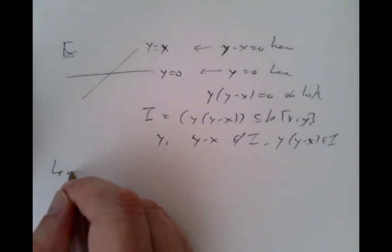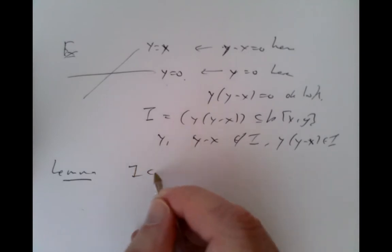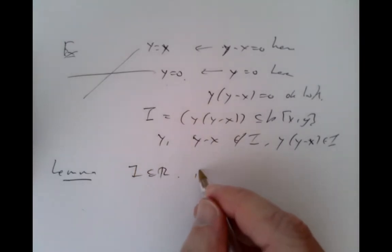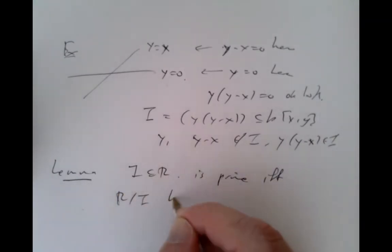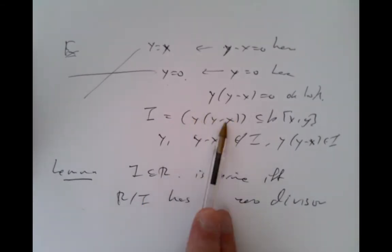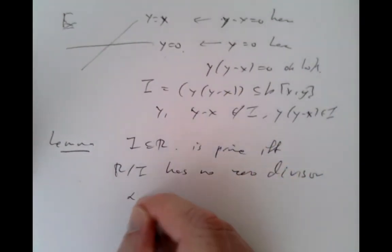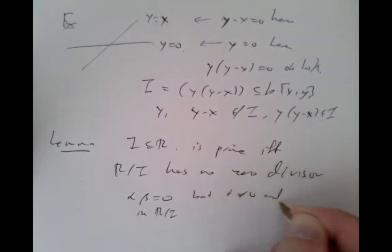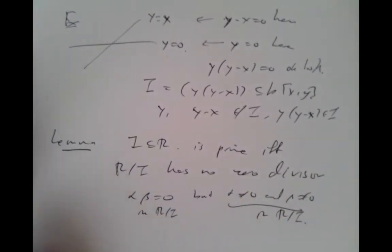The elementary observation, which I won't prove, is that an ideal I in a commutative ring with identity is prime if and only if the quotient ring R mod I has no zero divisors. A zero divisor means alpha times beta equals zero in the quotient ring, but alpha is not zero and beta is not zero in the quotient ring.